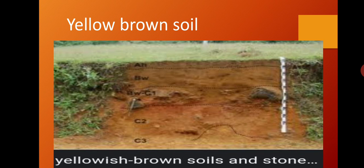Yellow-brown soil: these soils are found in the areas of extreme rainfall. They are not very fertile, and therefore they are not very useful for agriculture.